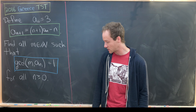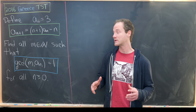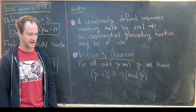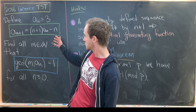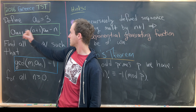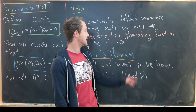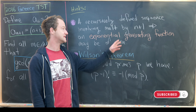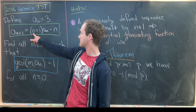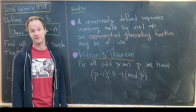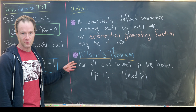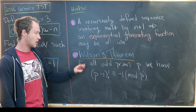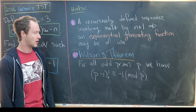Here are some hints to get you started. First, a recursively defined sequence like this — where one term depends on the last term with a multiplication by something involving n — implies that the use of an exponential generating function might be helpful. Furthermore, once you get a closed form for this sequence, you might find Wilson's theorem useful. Wilson's theorem says: for all odd primes p, (p−1)! is congruent to −1 mod p.